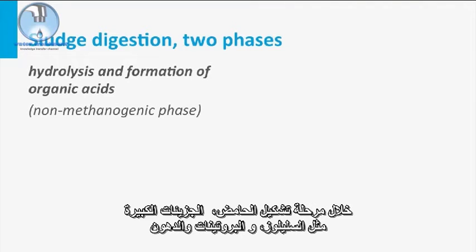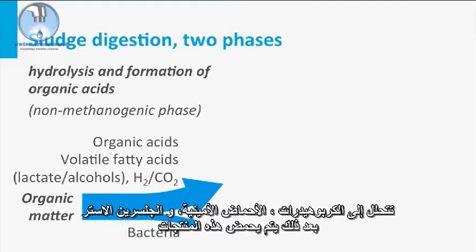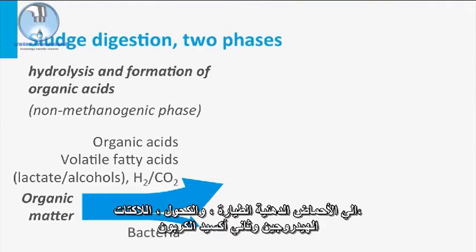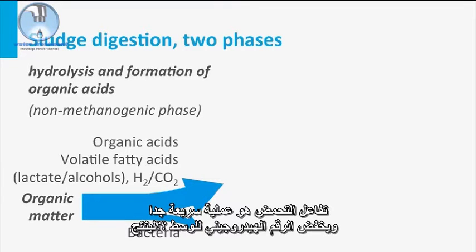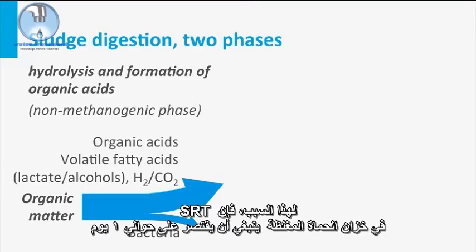During the acid-forming phase, large molecules such as cellulose, proteins, and fats are hydrolyzed to carbohydrates, amino acids, and glycerol esters. Subsequently, these products are acidified to volatile fatty acids, alcohols, lactate, hydrogen, and carbon dioxide. The acidification reaction is a very fast process and lowers the pH of the medium, resulting in odorous sludge. For this reason, the SRT in the sludge thickening tank should be limited to about one day.